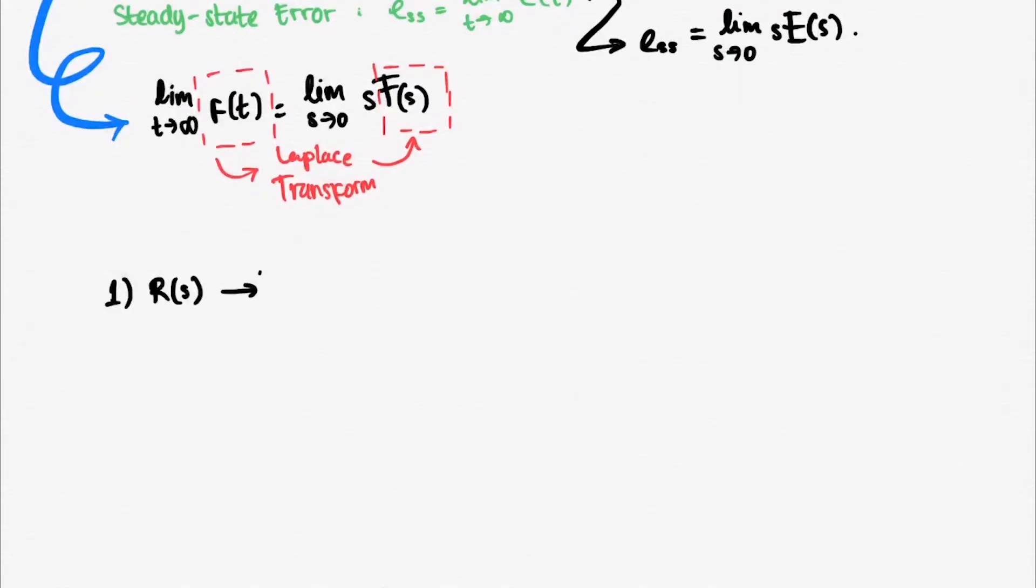There are two most common form of systems that we will analyze at steady-state error. The first one is this straightforward system. From our definition of steady-state error, we know that e of s is equal to R of s minus C of s.